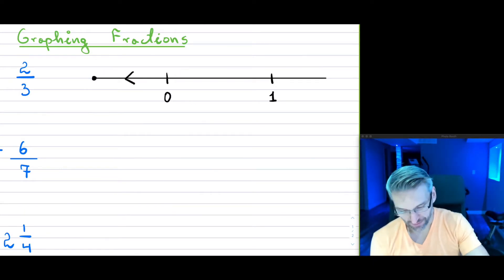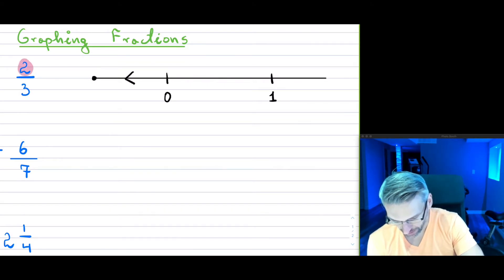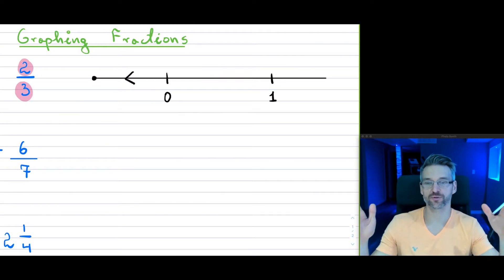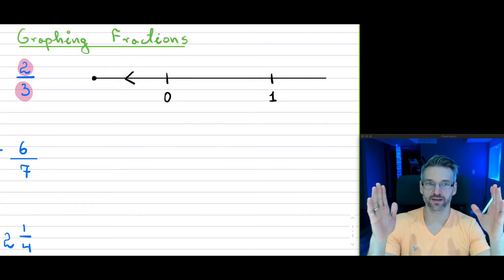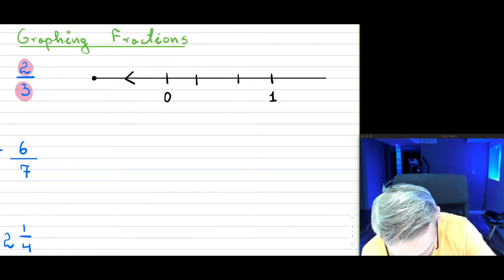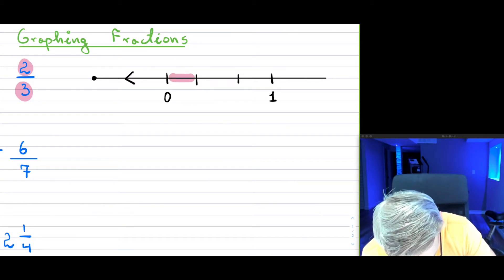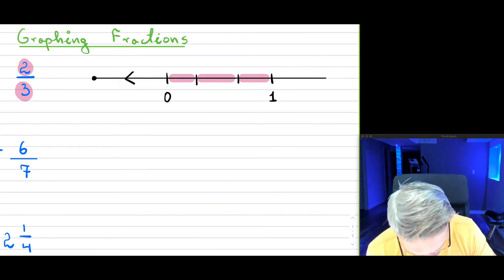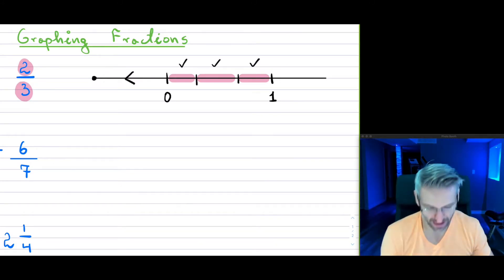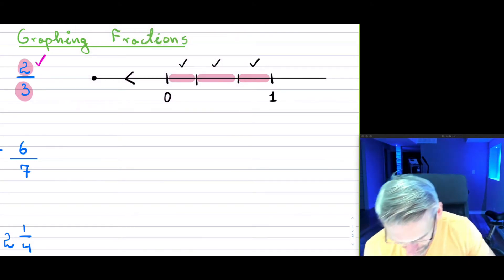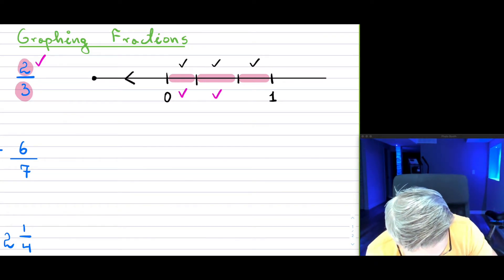With these fractions, you have a numerator and a denominator. The denominator always tells you what to divide your entire whole into. In this case, we divide the space between 0 and 1 into three pieces — first, second, and third — which together make up a whole of one. The numerator tells us we only have two of those pieces, so we take two pieces.